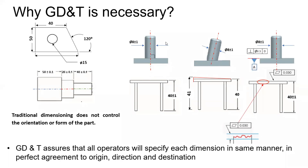The takeaway is that in traditional dimensioning we couldn't control geometric features properly. Without GD&T, manufacturing will give you a product that passes quality inspection but won't perform its function. GD&T is necessary to ensure that the shape of the geometry is accurate and performs the function for which it was designed.